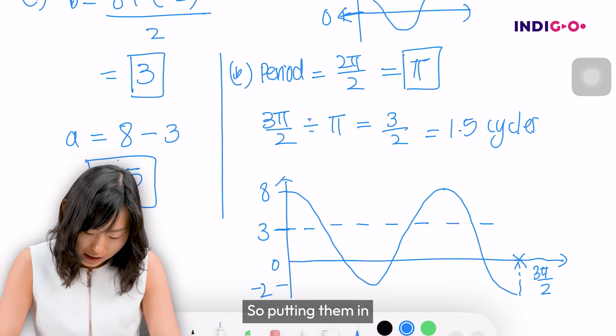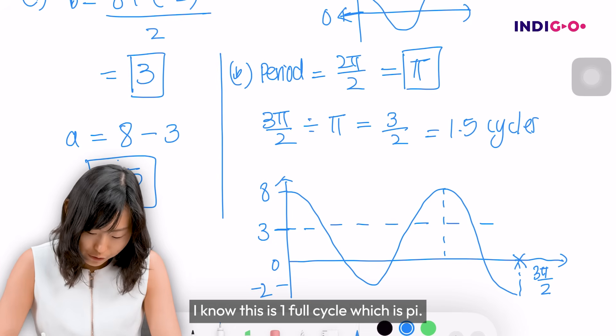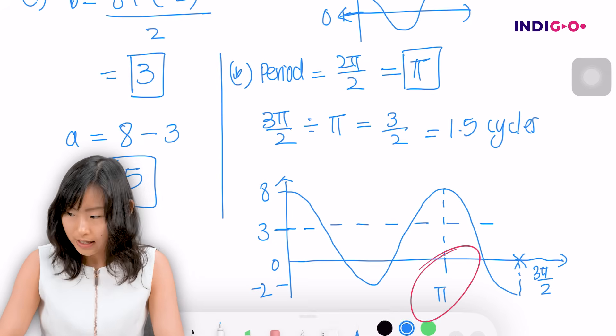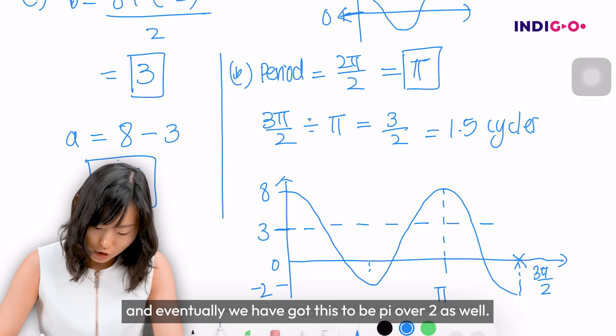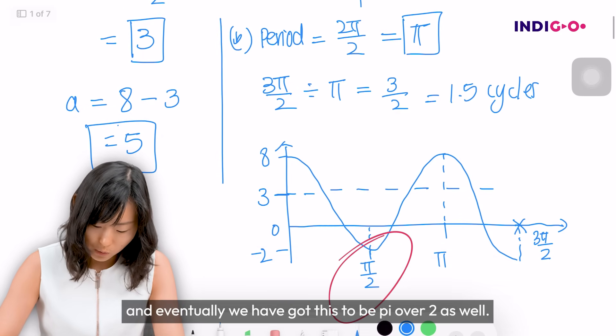So putting them in, I know this is one full cycle which is π. I'll put all these together and eventually we have this to be π/2 as well.